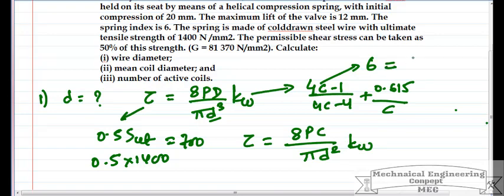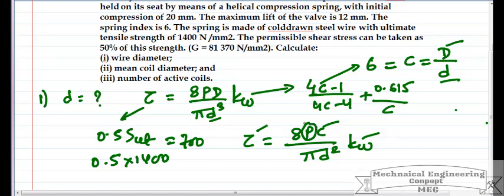The spring index C = D/d, where capital D is the mean coil diameter and small d is the wire diameter. So C is known as 6, Kw is known, τ is known — but there is one other unknown besides the wire diameter d, which is the load W.